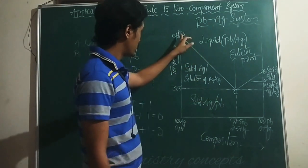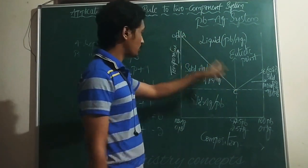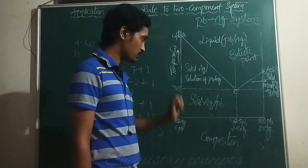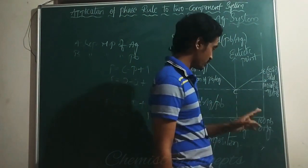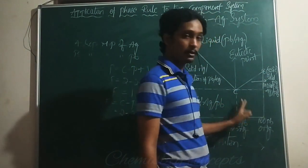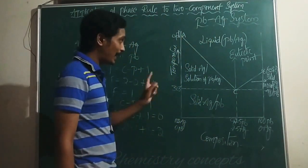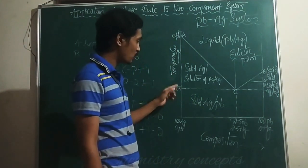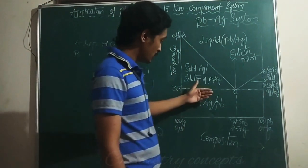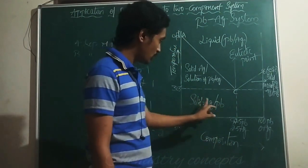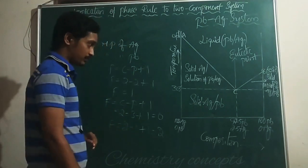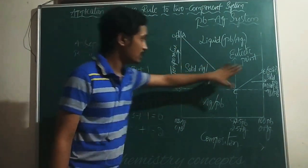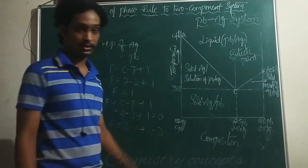Below curve AC, two phases exist: solid Ag plus solution. Below curve BC, two phases exist: solid Pb plus solution. Below the eutectic temperature of 303°C, two solid phases coexist: solid Ag and solid Pb. In all these two-phase regions, the system is monovariant (F = 1).